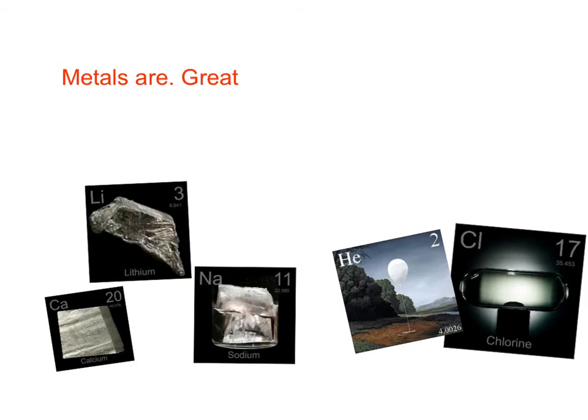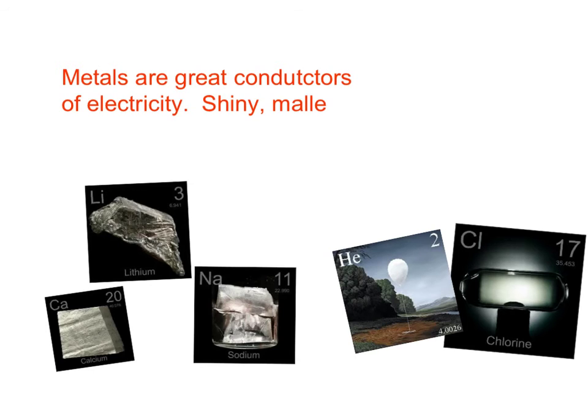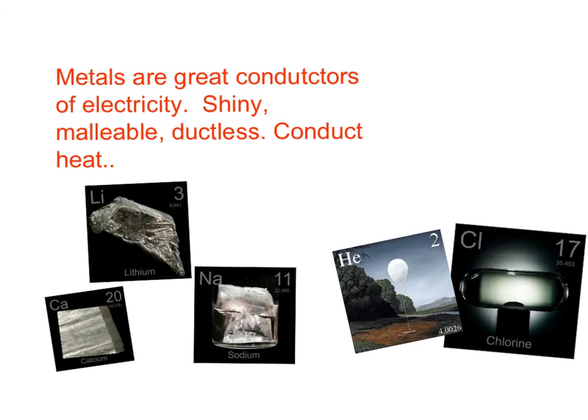Metals are great conductors of electricity. They are shiny. They are also something called malleable, and malleable means something that you can bend. We also call them ductile. Ductile means it's something that you can pull into a wire and sometimes rolled into sheets. Think of aluminum. Aluminum foil, right? We can roll and push that into sheets. They also conduct heat.